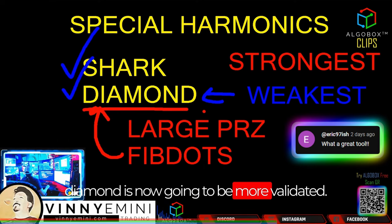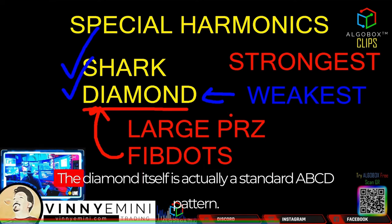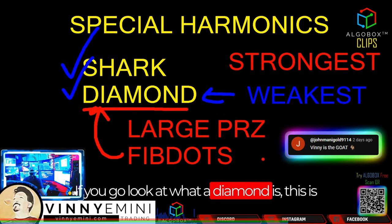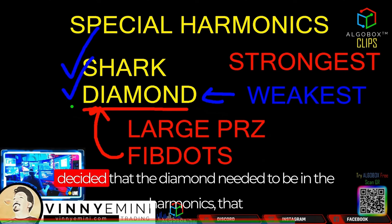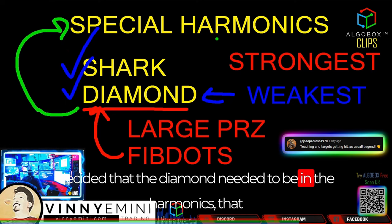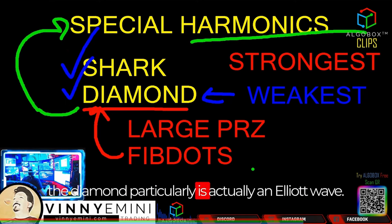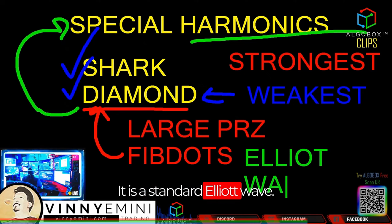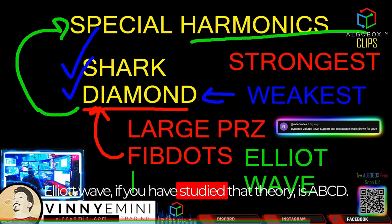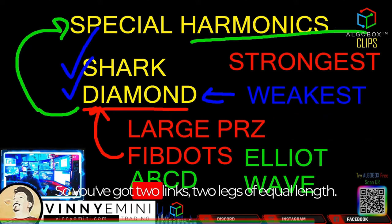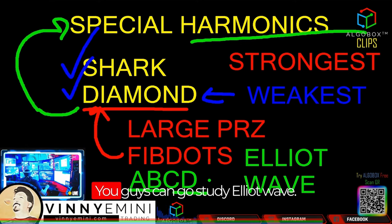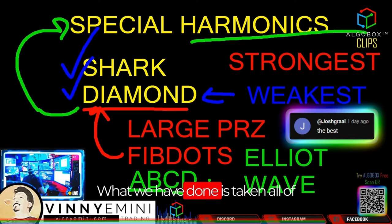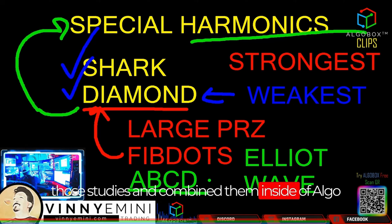The diamond itself is actually a standard ABCD pattern. Don't ask me why whoever invented harmonics decided the diamond needed to be classified as one — because the diamond is actually an Elliott Wave. Elliott Wave theory gives you ABCD: two legs of equal length, where A to B equals C to D. We've taken all of those studies and combined them inside of AlgoBox to be very powerful.